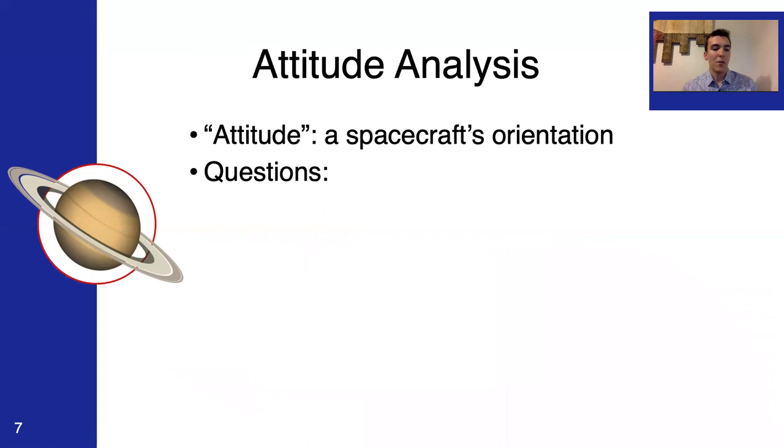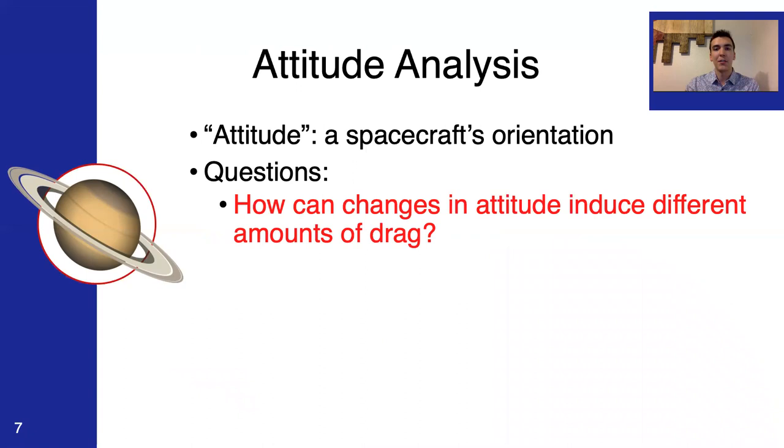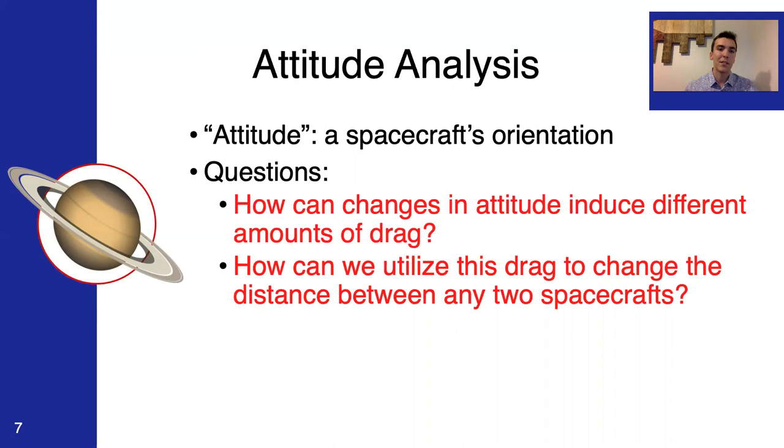One thing that they needed my help on was a bit of attitude analysis. What is attitude? Attitude is defined as the spacecraft's orientation in three dimensions. This is not to be confused with altitude, which is the spacecraft's height above sea level. So, the general questions I was tasked to investigate were, how can changes in attitude induce different amounts of drag? So, there is drag in space. Even in space, there are enough particles that can significantly reduce the energy of an orbiting body.